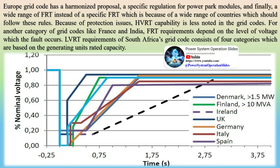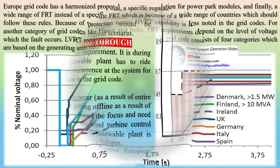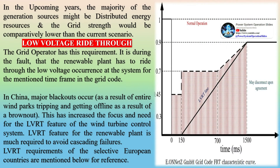The purpose of using FRT is to prevent generation loss as much as technically and economically reasonable. FRT capability can be applied to power generation units, power parts modules, and DC converters. The FRT diagram differs among countries, and at normal and short-circuit conditions, generation units must stay connected to the grid within a specific voltage and frequency range.